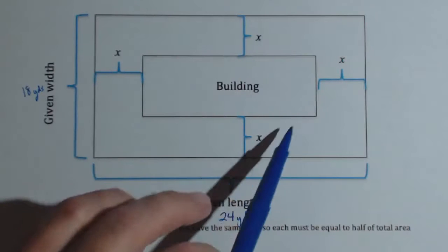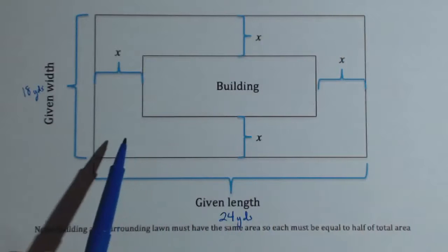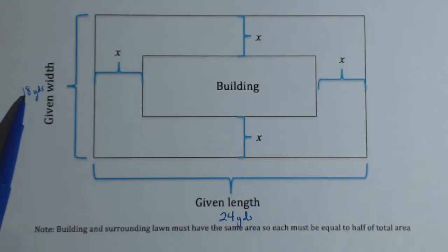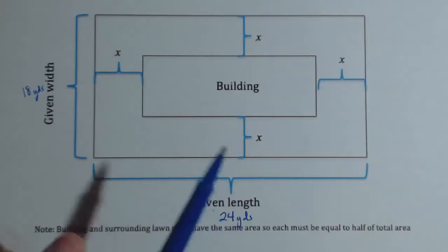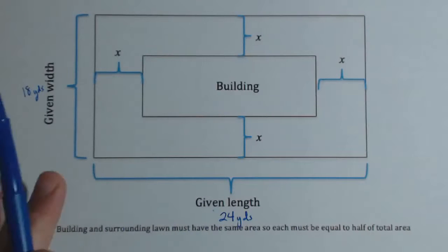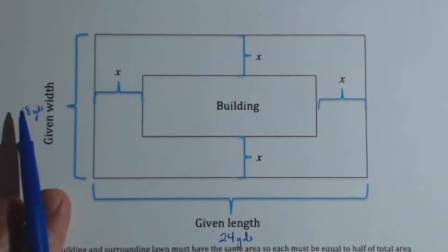So we know the total area of the lot, because we could just multiply the 18 by the 24, which gives us 432 square yards. That's the total area. But what we want to do is figure out what are the dimensions of the building.